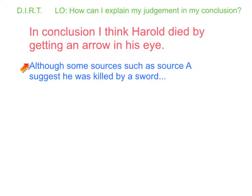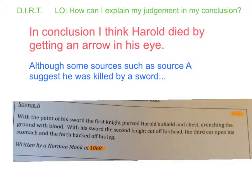We say: although some sources such as source A suggest he was killed by a sword. Now we need to explain why we think these sources that suggest he was killed by a sword are less likely than him getting an arrow in his eye. Well, let's have a look at source A. We know it's written by a Norman monk and it talks about the fact that he has a sword and they cut his head, they cut open his stomach, they're hacking off his legs.